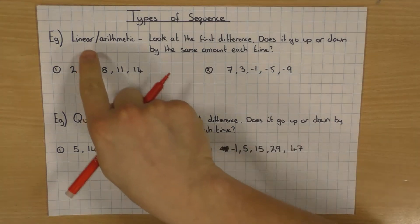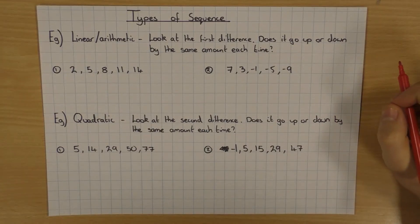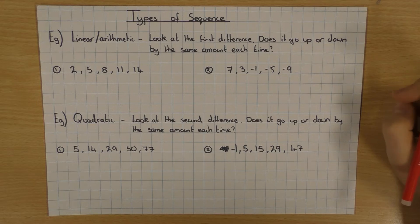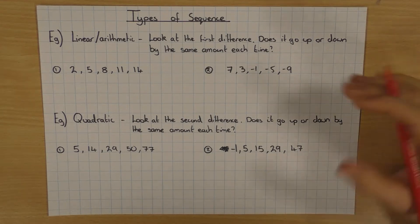And the first one is a linear or arithmetic sequence. This is the most common one that you'll see at high school. It's the one that you usually find the nth term for. So what makes a linear or arithmetic sequence special?